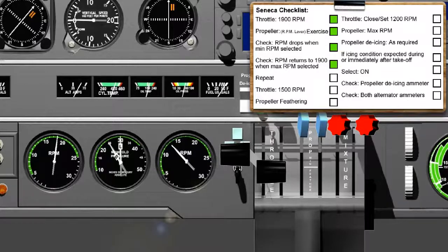Check RPM returns to 1900 when max RPM selected. Return the propeller control lever to maximum RPM and check that the RPM recovers back to 1900 as the propeller blades move back towards fine pitch.